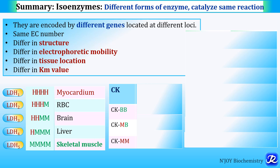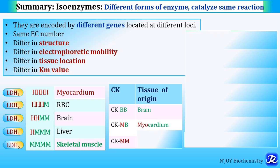CKBB is present in the brain and will be increased in brain injury. CKMB — both M and B subunits — is characteristic of the myocardium and will be increased in myocardial infarction. CKMM — both M subunits — is present in skeletal muscle and will be increased in muscular dystrophy and myopathy.